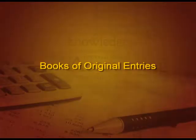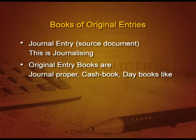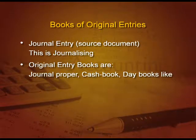Welcome students. We are now going to start with the second part of chapter 3, that is books of original entries. The first journal entry is done through a source document, and this is called journalizing. The original entry books are journal proper, in which we record those transactions which are not very specific, like cash book.